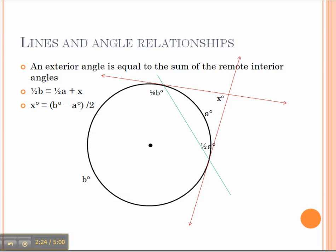using the exterior angle is equal to the sum of the remote interior angles, which creates that angle X between two tangent lines is also half the difference between angle A and angle B.